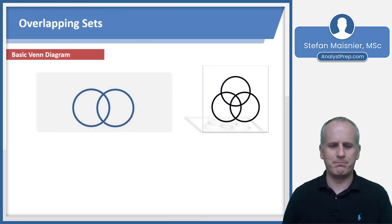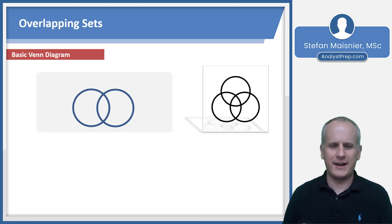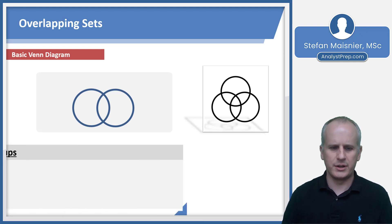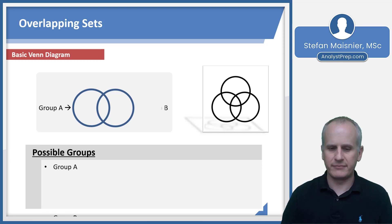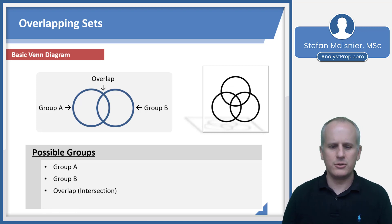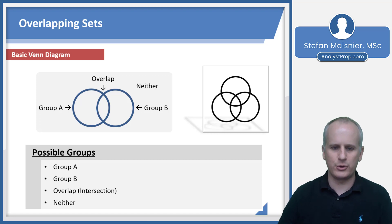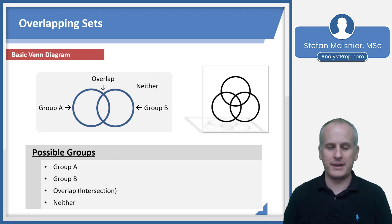Here we have a basic Venn diagram to help us define how overlapping sets work. You're going to have four possible groups: group A, group B, your overlap — also known as the intersection — and those that are neither, meaning not in group A nor group B.